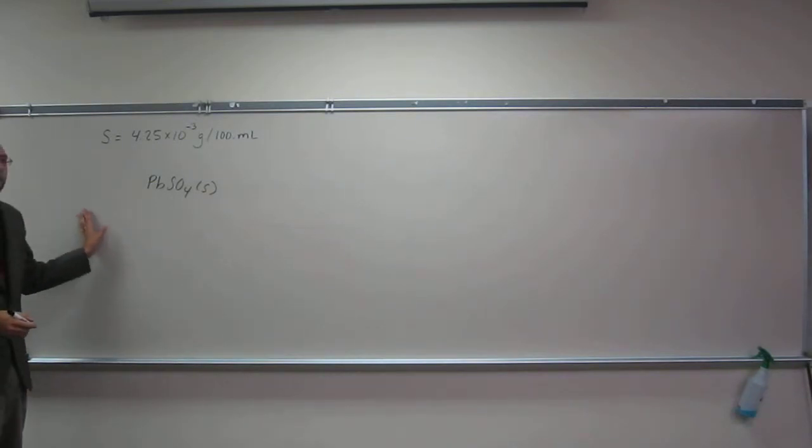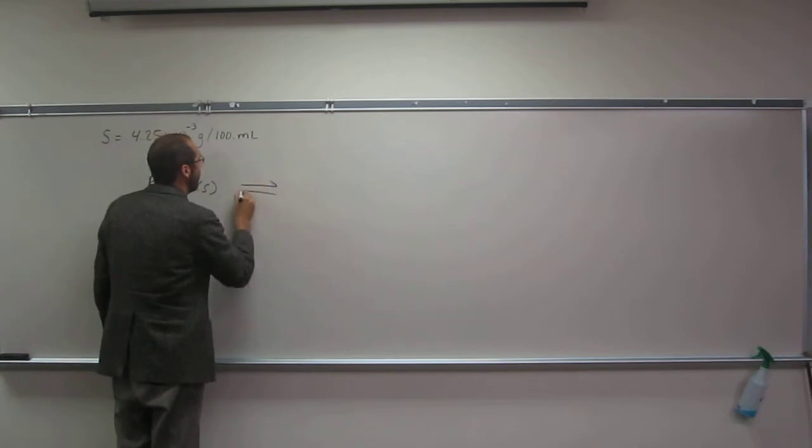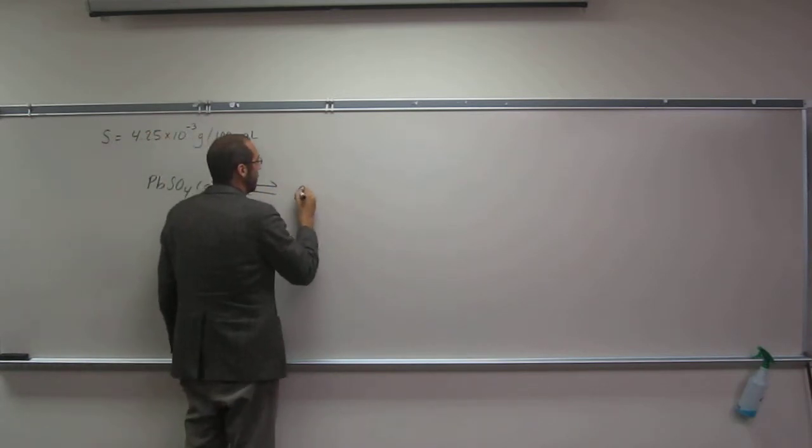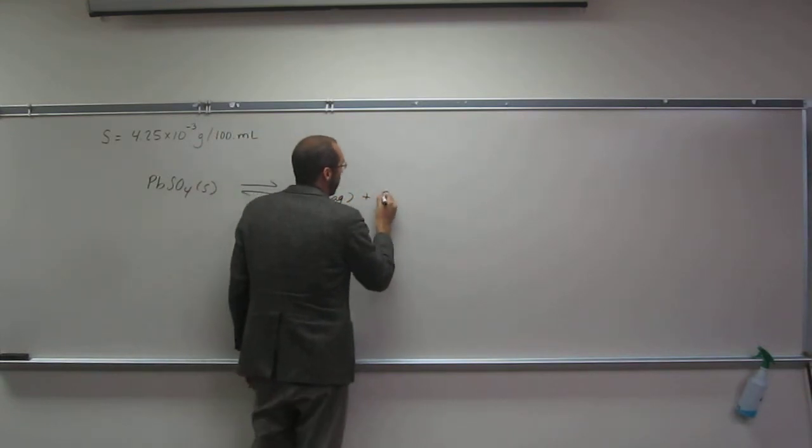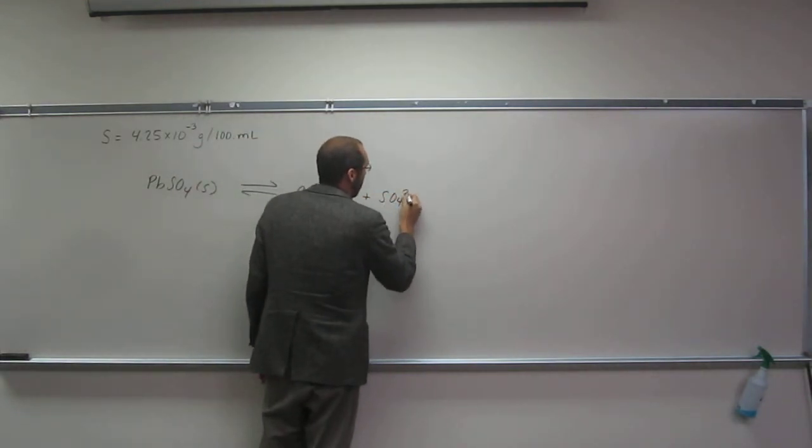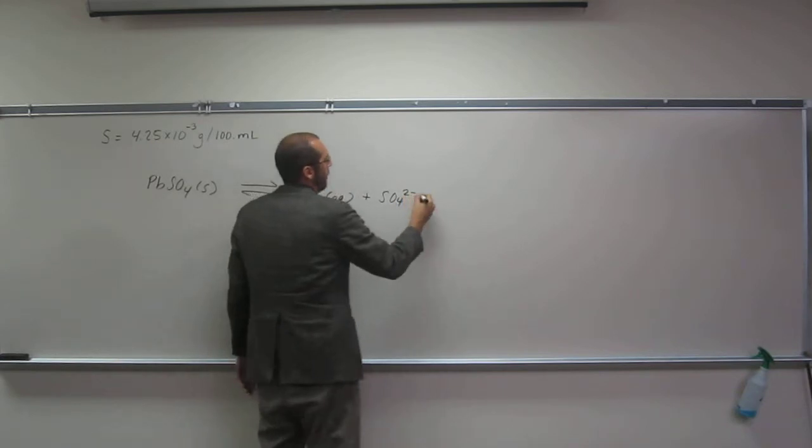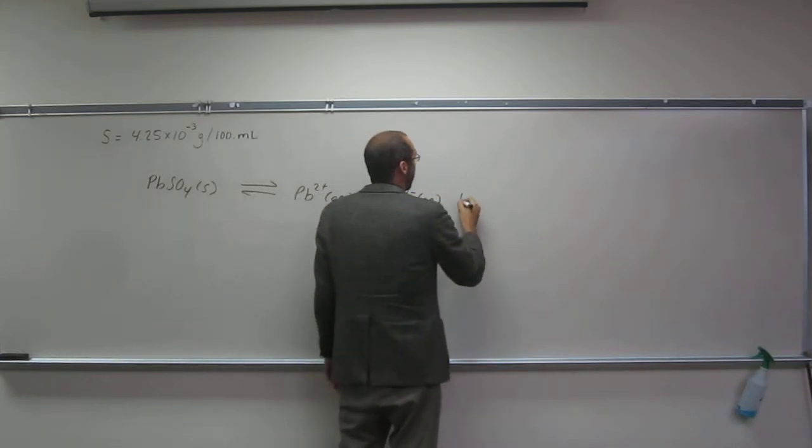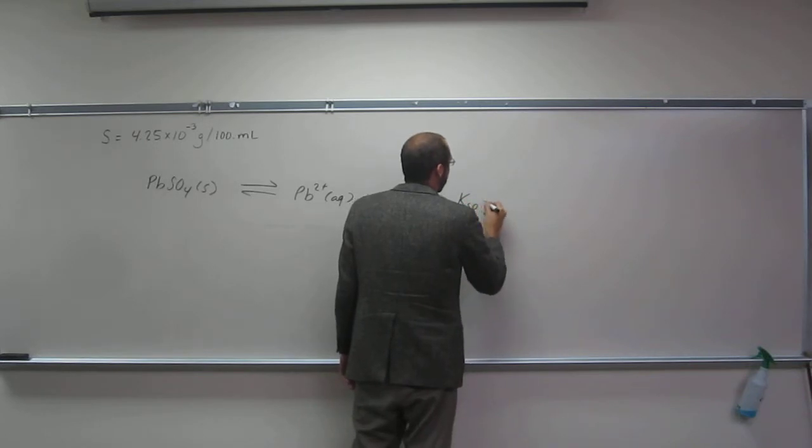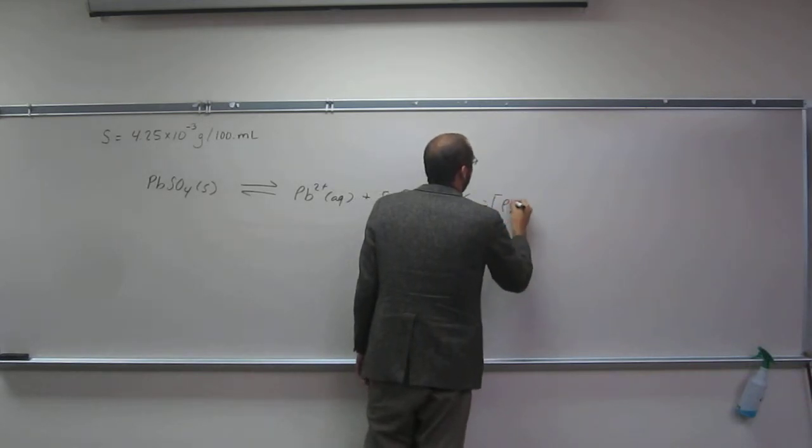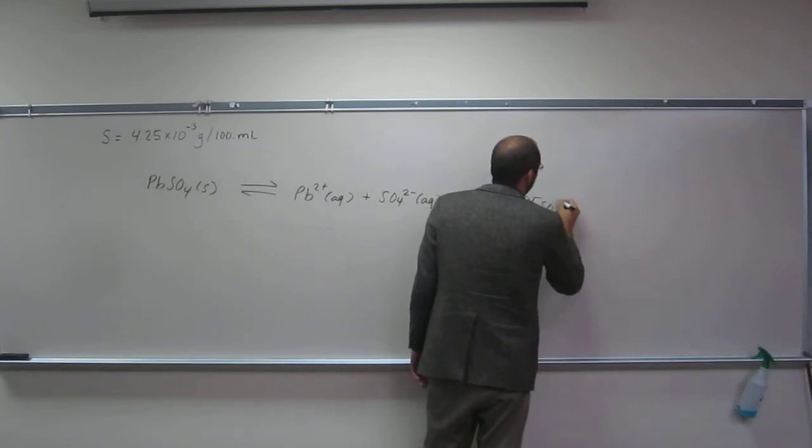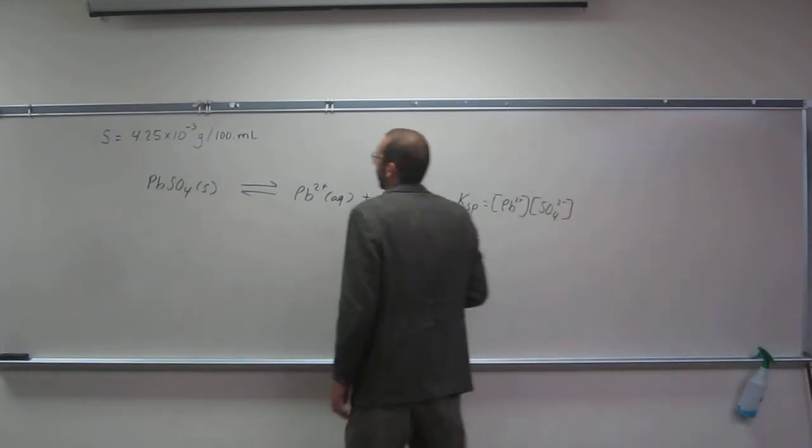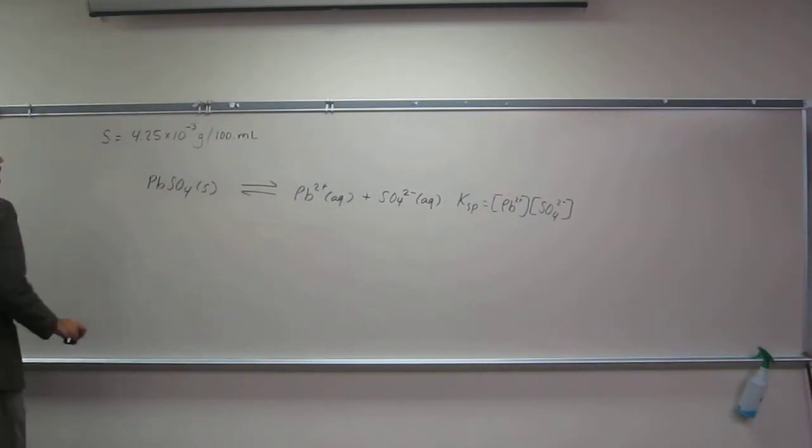You also know that this is a slightly soluble compound, so write a reaction equation. We know the Ksp of this is going to be Pb²⁺ times SO₄²⁻.